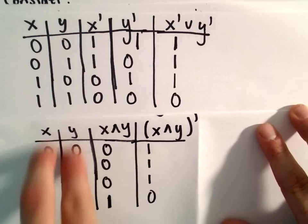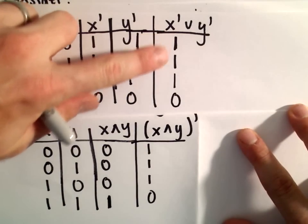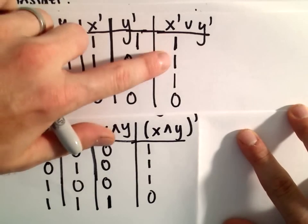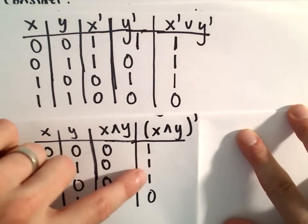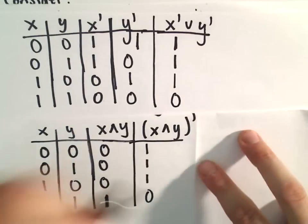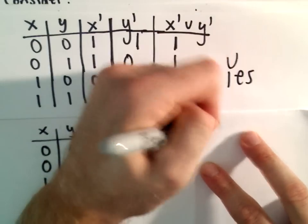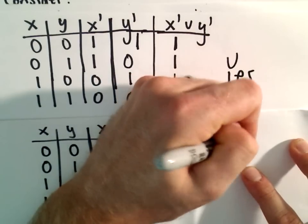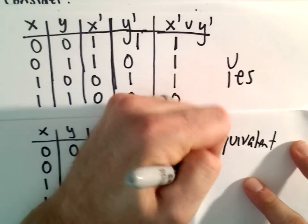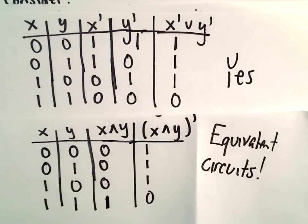The inputs are exactly the same, and notice the outputs are exactly the same. We get 1, 1, 1, 0. We get 1, 1, 1, 0. So we would say yes, these are in fact equivalent circuits.